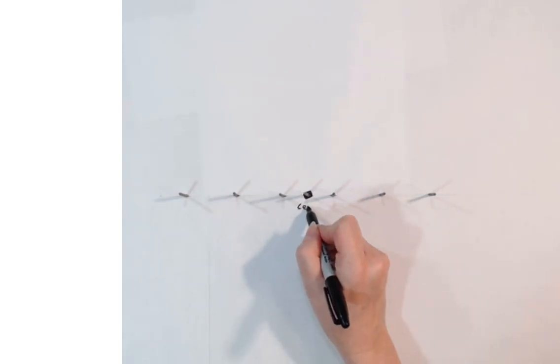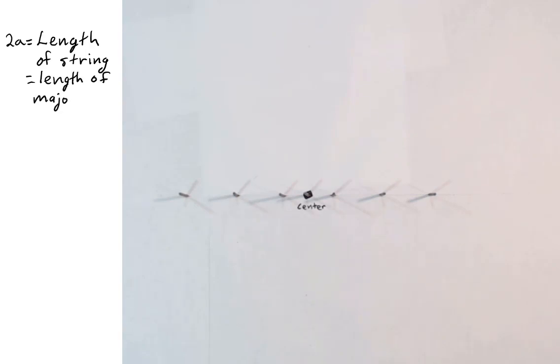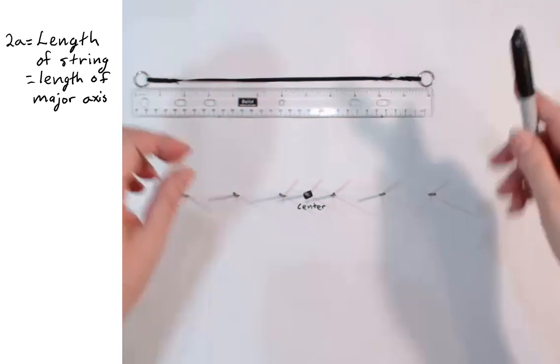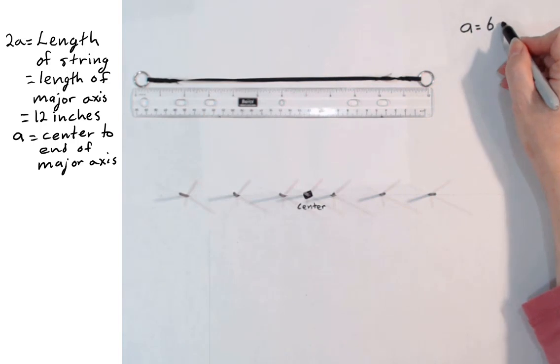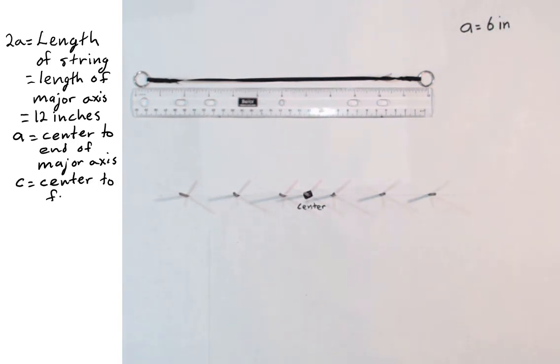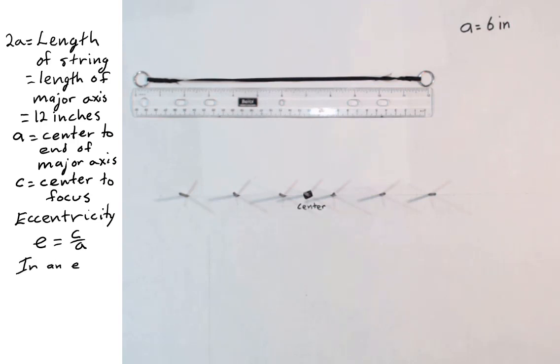Here we consider what eccentricity means in the ellipse. I will draw several ellipses, all with the same center and the same length of string, with different foci, so we can see how the placement of the foci affects the shape of the ellipse. The length of the string is 2a, which is also the length of the major axis. In this case, the string is 12 inches long, so 2a is 12 inches, and a is 6 inches — the distance from the center to a vertex at the end of the major axis. The distance from the center to one focus is called c. Eccentricity is c divided by a. Since the foci are always inside the ellipse, c is always less than a, so eccentricity is always less than 1.